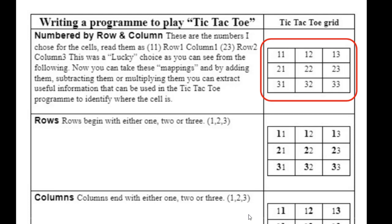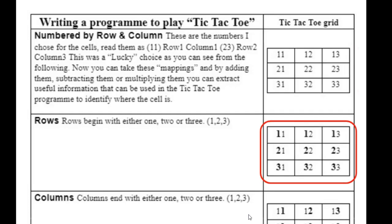The first digit in the number represents the row. So 11 means row 1, column 1; 12 means row 1, column 2; 13 means row 1, column 3. Then you've got row 2, column 1, 2, and 3, like that. By numbering them this way, you can do something very useful.